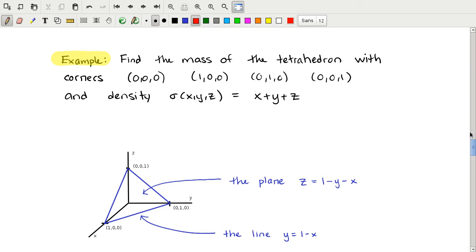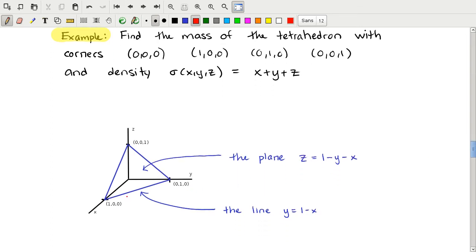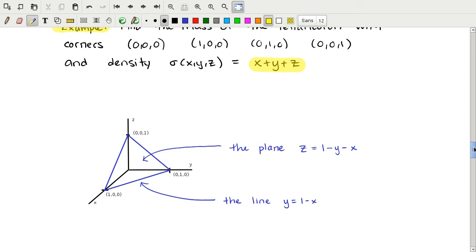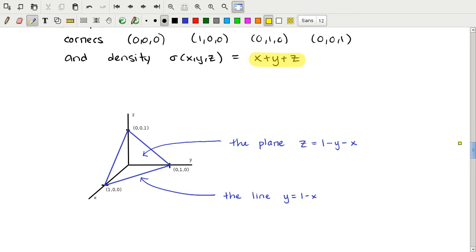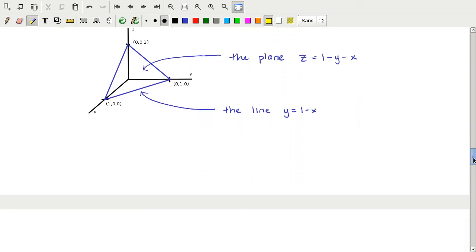For example, we can find the mass of a familiar object—a tetrahedron with specified vertices and a specified density. Density x plus y plus z is zero at the inner apex of the tetrahedron at the origin and increases as we move out towards the outer plane. To fully specify this region, however—this three-dimensional region over which we are going to integrate this density function—we must parametrize the entire three-dimensional object. We notice immediately that this top surface can be expressed as a plane, and with a little bit of work, we can find that the equation for that plane is z equals 1 minus y minus x.